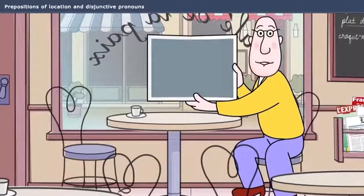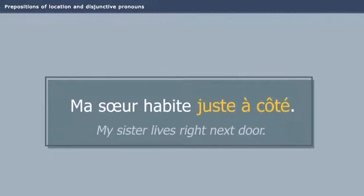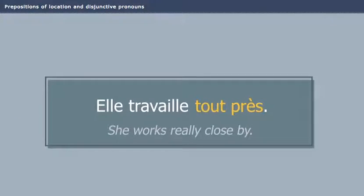Attention! When certain prepositions of location are not followed by a noun, they can be used without de. Ma sœur habite juste à côté. Elle travaille tout près. On essaie?